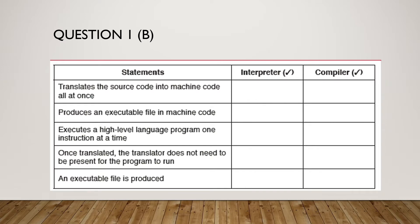Question 1b. High-level languages require either an interpreter or a compiler to translate the program. The table below lists a number of statements about language translators. Tick which statement refers to an interpreter and which refers to a compiler. 'Translates source code into machine code' — the answer is Compiler.